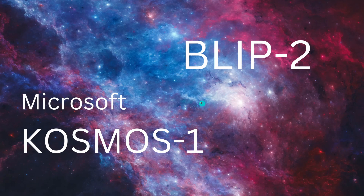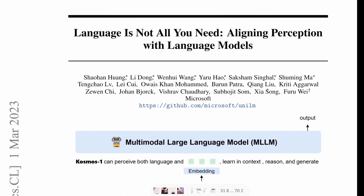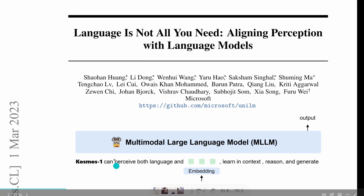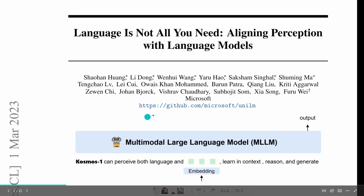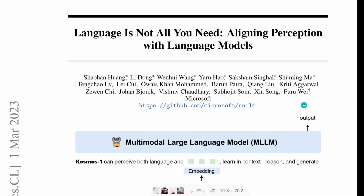Hello community! Microsoft released a new product, Cosmos One. So let's have a look at this. From March 1st, 2023, here is a beautiful publication from Microsoft about multimodal large language models, and they call their system Cosmos One. If you read the paper you think, hey, there are some nice ideas inside.